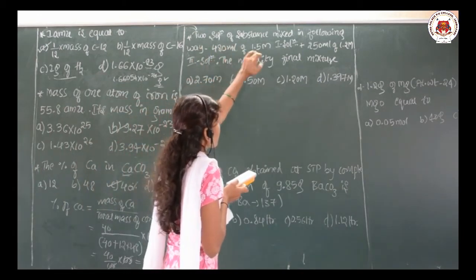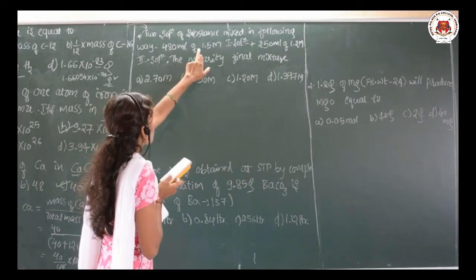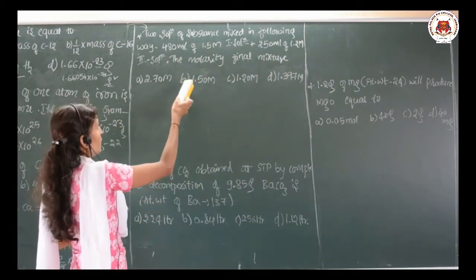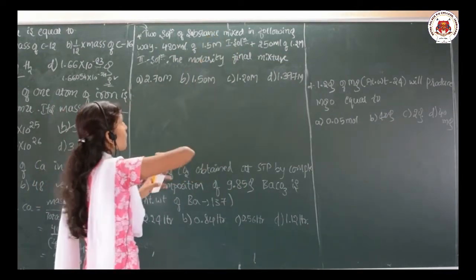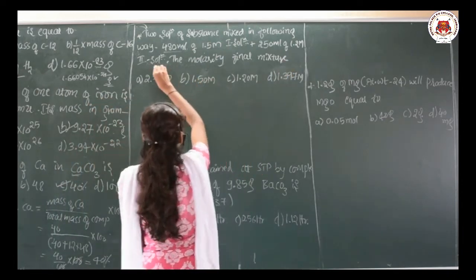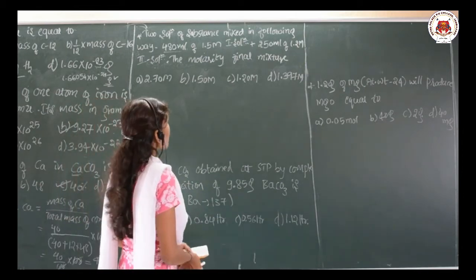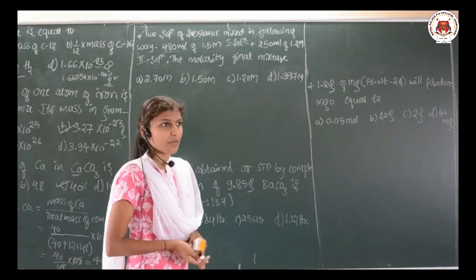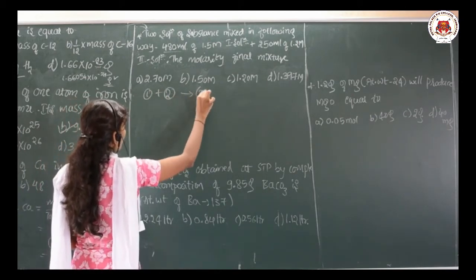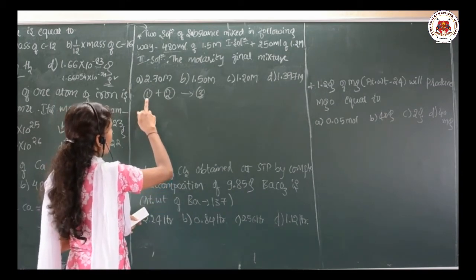Next: two solutions of a substance are mixed — 480 mL of a 1.5 molar first solution and 250 mL of a 1.2 molar second solution. The first solution has molarity 1.5 M and volume 480 mL, and the second solution has molarity 1.2 M and volume 250 mL. The question is: what is the molarity of the final mixture?